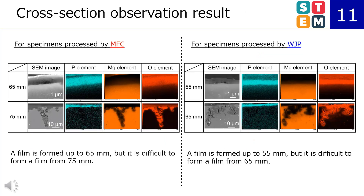On this slide, the results of cross-section observation with SEM-EDS are shown. In MFC, a film is formed up to 65mm, but it is difficult to form a film from 75mm onward. In WJP, a film is formed up to 55mm, but it is difficult to form a film from 65mm onward.